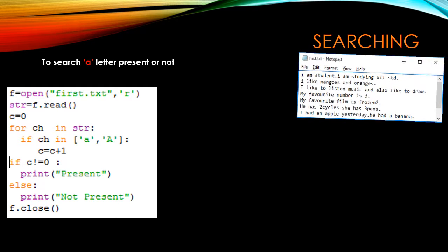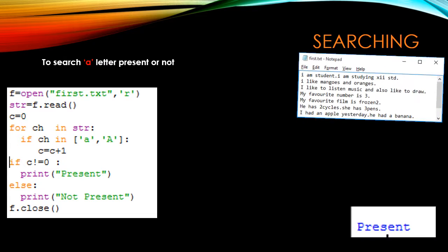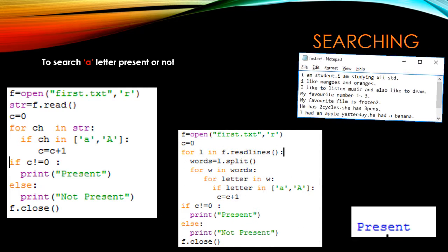If the letter is present, we increment the counting variable 'c'. After the loop, if c is not equal to 0, it means the letter is present, otherwise not present. Another method: instead of reading character by character, we can read line by line, split the line into words using split(), assign words one by one to variable 'w', then assign each letter one by one to a 'letter' variable and check.